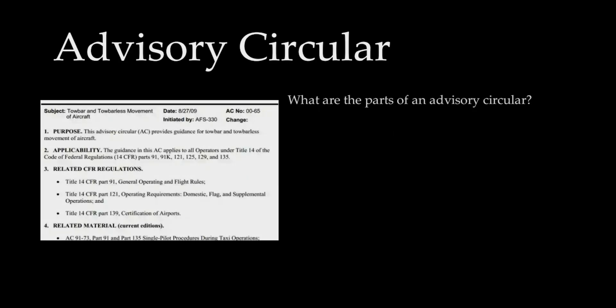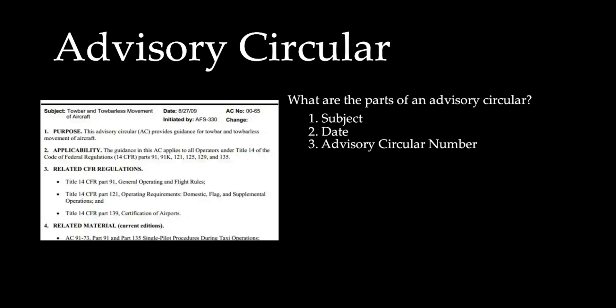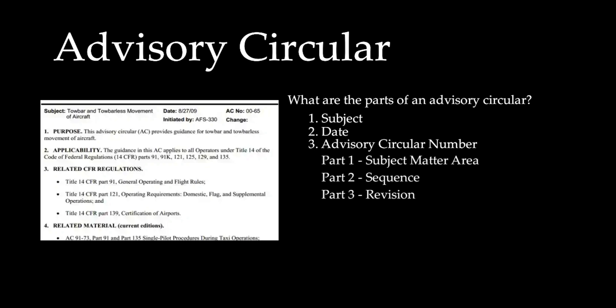What are the parts of an Advisory Circular? First is the subject — this is where you will see the title of the Advisory Circular. Next is the date — this is where you can see when the Advisory Circular was released. Next is the Advisory Circular number, which has three parts. Part one is the subject matter area: the first part of the number identifies the subject matter area of the AC and corresponds to the appropriate 14 CFR part.